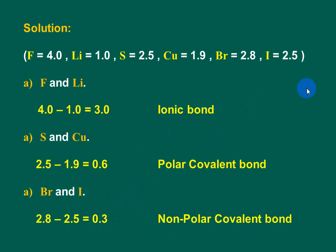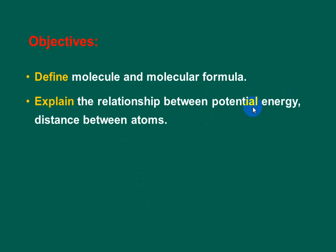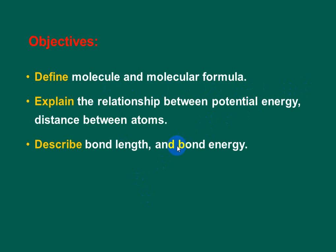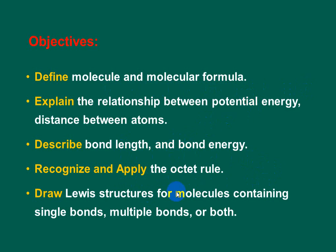Let's start Section 2. The objectives of our section are: to define molecule and molecular formula; explain the relationship between potential energy and the distance between atoms; describe bond length and bond energy; recognize and apply the octet rule; and draw Lewis structures for molecules containing single bonds, multiple bonds, or both.